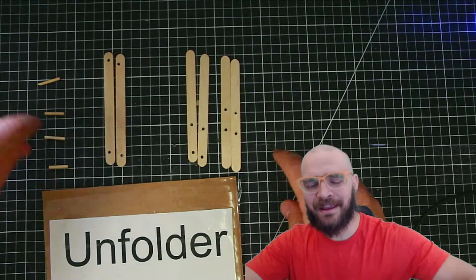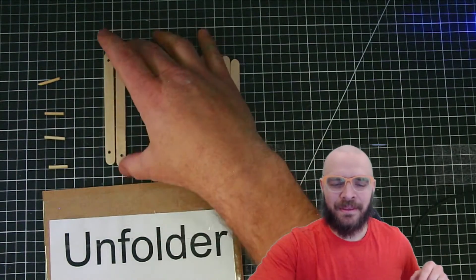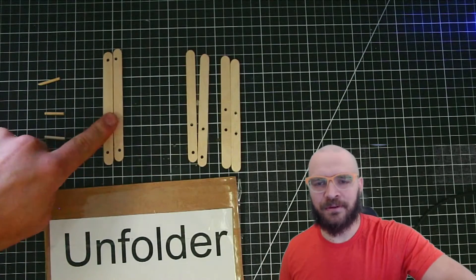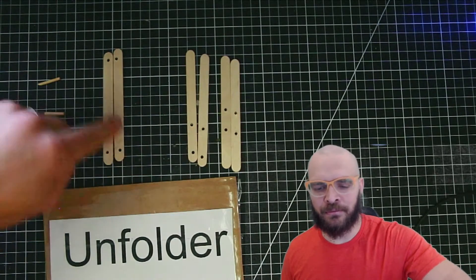This little guy's called the Unfolder. Take a look at how these two popsicle sticks were drilled together so that these holes are perfectly aligned.